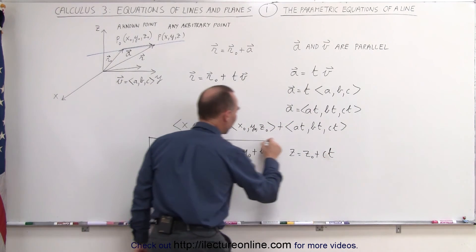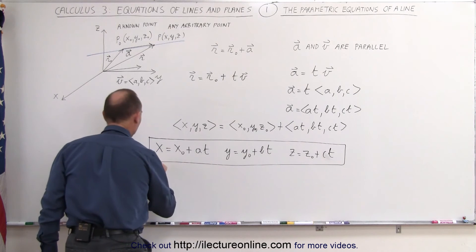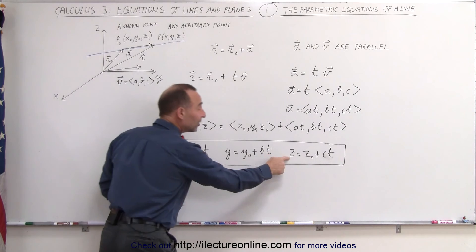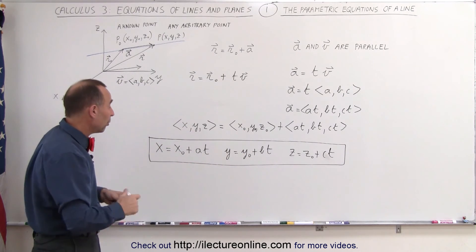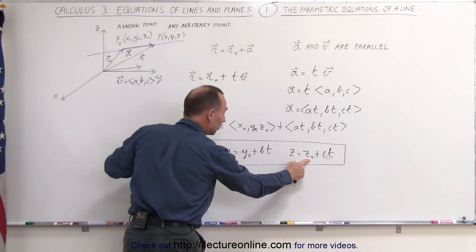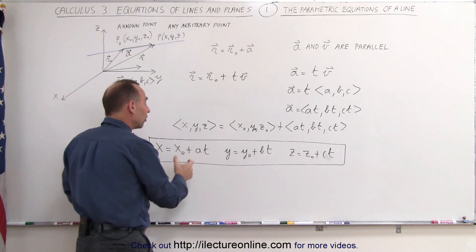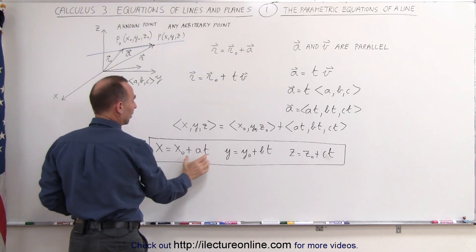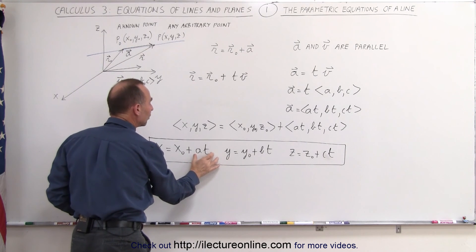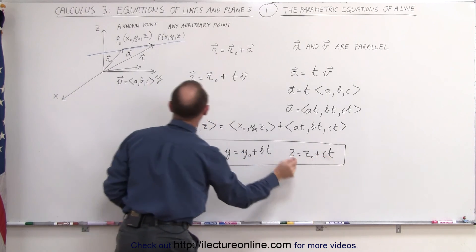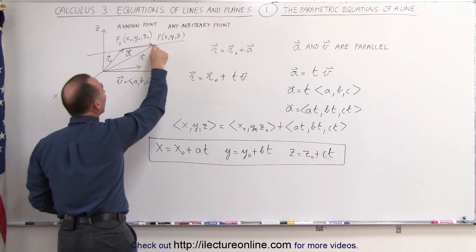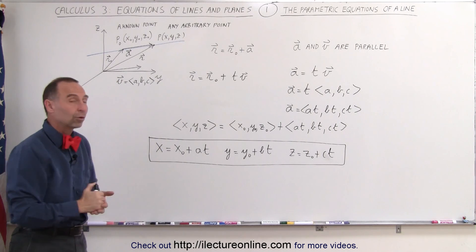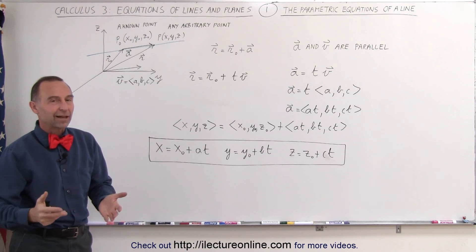And these then become what we call the three parametric equations that relate the unknown point (x, y, z) on the line — any arbitrary unknown point — to the known point (x sub naught, y sub naught, z sub naught), plus some additional distance in the direction of the v vector, which is the a vector. These are the distances — the magnitudes in the x, y, and z directions — from the known point to the unknown point on the line. And that's how we define the three parametric equations of a line in space.